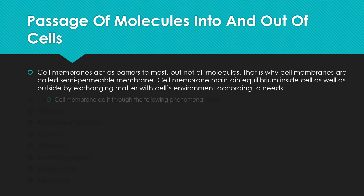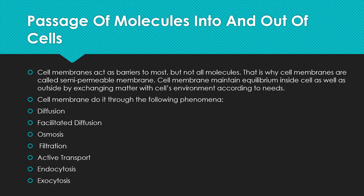The cell membrane does this function by the following phenomena: first is diffusion, second is facilitated diffusion, third is osmosis, fourth is filtration, sixth is active transport, seventh is endocytosis, and last is exocytosis. Today we only cover the first — diffusion — because it is a little bit long. So let's start studying diffusion.